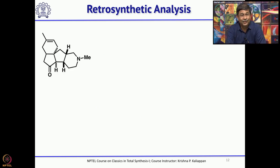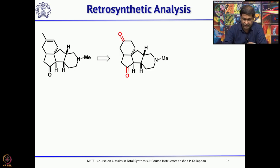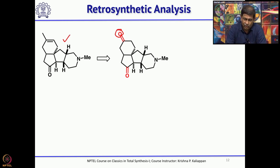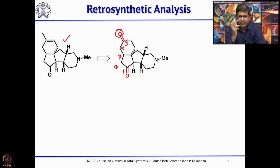Let us look at the retrosynthetic analysis. This molecule can easily be obtained from a diketone. Between the five-membered and six-membered rings, the six-membered ring ketone is a little more reactive, so you can do a Wittig on this ketone followed by isomerization to get the natural product. Looking carefully at the diketone, it is a 1,5-diketone. Whenever you see a 1,5-diketone in a natural product, the Michael reaction should immediately come to mind.